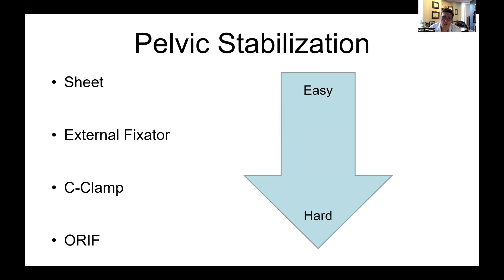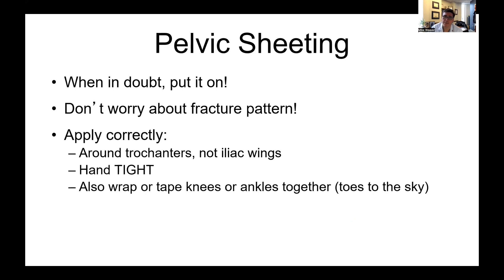Para estabilizar la pelvis se usa comúnmente una sábana o faja pélvica. Las sábanas pélvicas son vitales, fáciles de usar y salvan vidas en emergencias. Si dudas, úsala, no importa el tipo de fractura. Aunque no son tan útiles en lesiones laterales, estabilizan en casos inciertos. La sábana debe ir baja en torno a los trocánteres, debe ajustarse mucho, lo más posible con las manos, evitando palos u otras herramientas para no excederse. Luego se pasa a cosas más invasivas: aplicar un fijador externo, una pinza en C especialmente útil para lesiones posteriores, o incluso llevar al paciente urgentemente al quirófano.